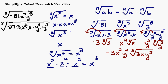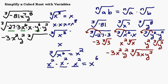Now underline what you can take out — your perfect cubes. The perfect cubes are negative 27, x to the sixth, and y to the sixth. Take the cubed root of those and bring them outside. The cubed root of negative 27 is negative 3. The cubed root of x to the sixth is x squared. The cubed root of y to the sixth is y squared. What remains underneath the cubed root — the parts that weren't perfect cubes — are the 3, the x, and the y squared, giving 3xy squared inside.